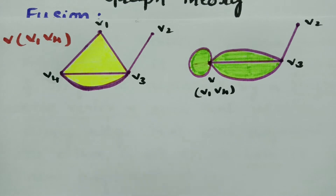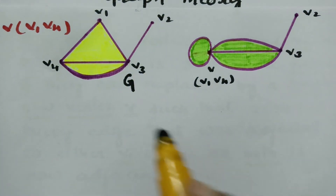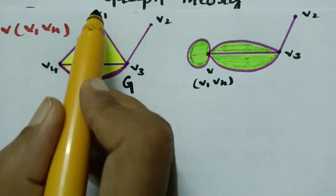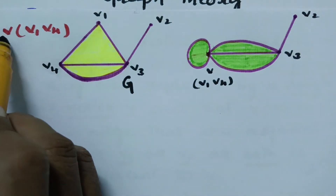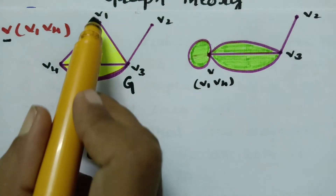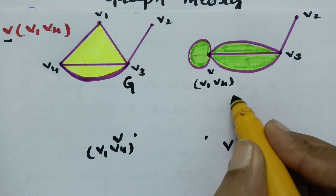With an example I will show you what fusion is and how to draw the figure. Here this is graph G1 and this is after fusion. There are four vertices: V1, V2, V3, and V4. Among these vertices, V1 and V4 are fused by the new vertex V. V3 remains the same vertex V3, and here this is V2.